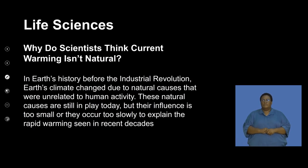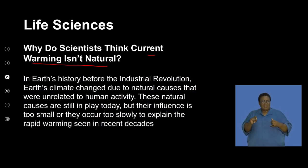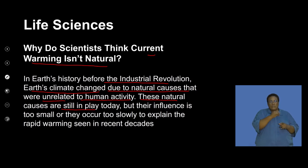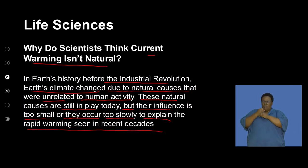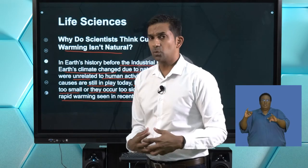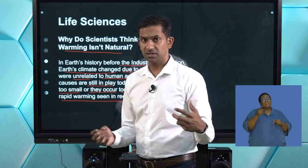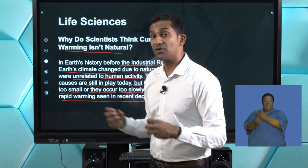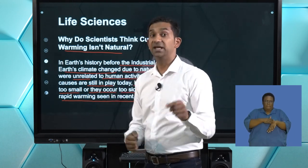Why do scientists think current warming isn't natural? Before the Industrial Revolution, climate change occurred due to natural causes unrelated to human activity. Those natural causes are still in play today, but their influence is too small or occurs too slowly to explain the rapid warming seen in recent decades. Some argue global warming is purely natural, but Earth's history shows this rapid change over such a short period is unprecedented and concerning.